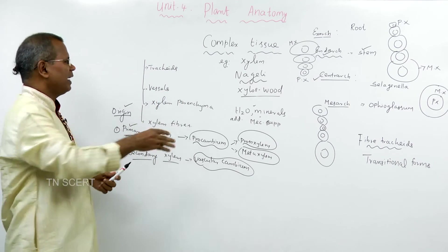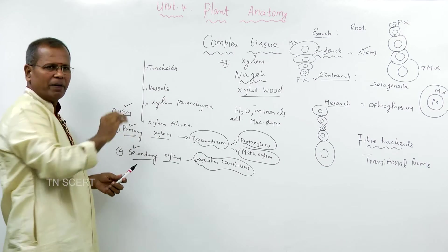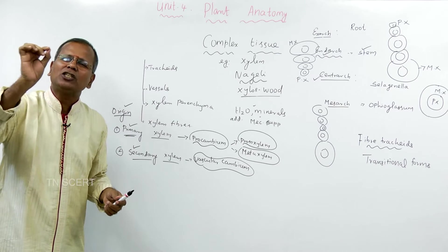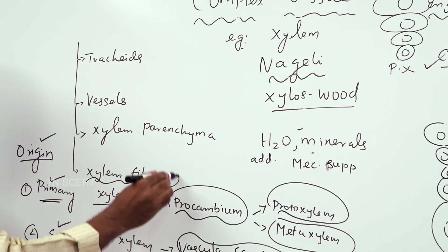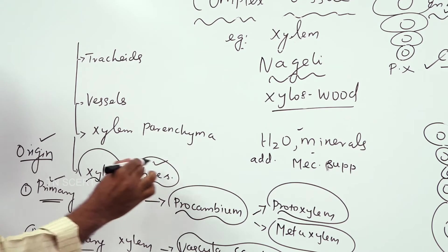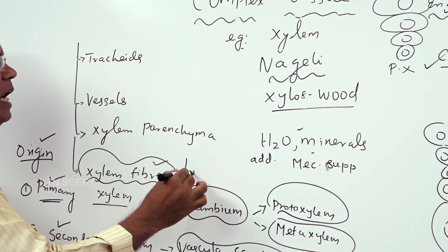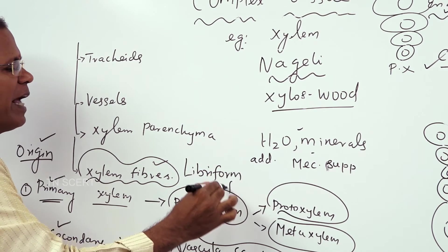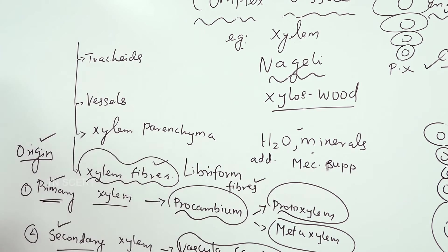In xylem there are four types: tracheid, vessels, parenchyma and fiber. The sclerenchymatous tissue present in the xylem is said to be xylem fiber. It is also known as libriform fibers. Function, additional mechanical support.